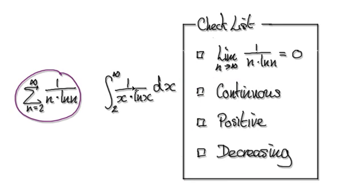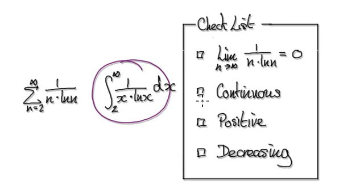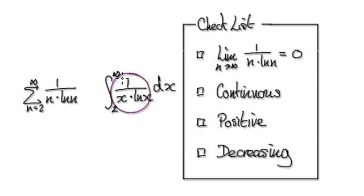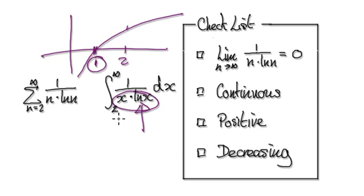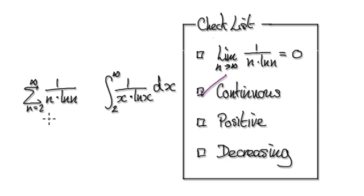Is this function continuous from 2 to infinity? Well, when will it break down? It breaks down when the denominator equals 0. The denominator breaks down when x equals 1 — because of the natural log. But here we are starting at 2, so everything is fine. This will be positive and continuous — nothing breaks down.